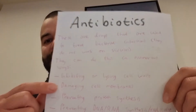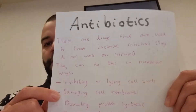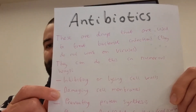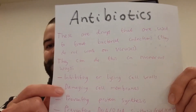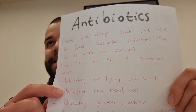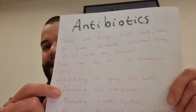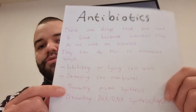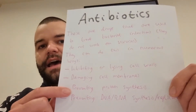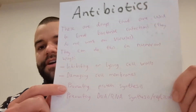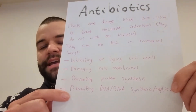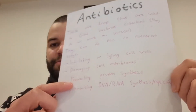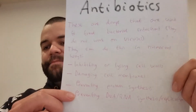They could also damage the cell membrane of the bacteria. Hopefully you remember from Unit 3, Outcome 1, the cell membrane controls what enters and leaves a cell. So if that's been damaged, the bacteria will be letting in stuff they don't want to and letting out stuff they don't want to, which will kill them as well. They may also prevent proteins being made that they need to function, or they may prevent DNA or RNA being synthesized or replicated. So that's how antibiotics work to kill bacteria.